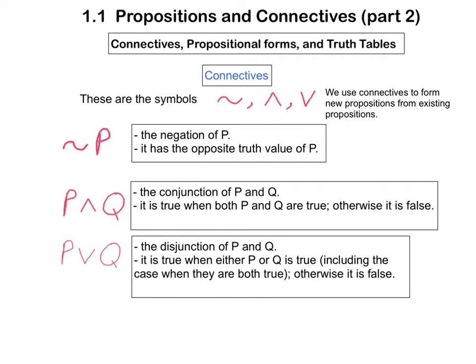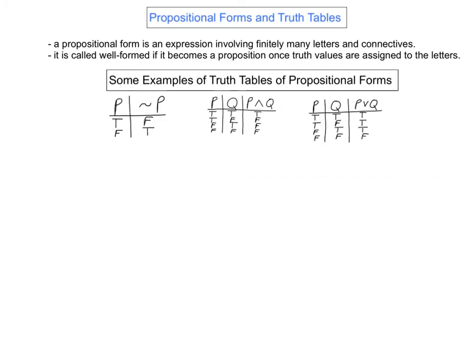This can be seen more clearly by looking at the so-called truth tables for each of these three propositions. The term propositional form refers to an expression involving finitely many letters and connectives. The letters represent propositions. We say that the propositional form is well-formed if it becomes a proposition once truth values are assigned to the letters that make it up.